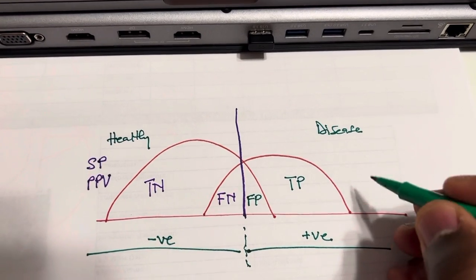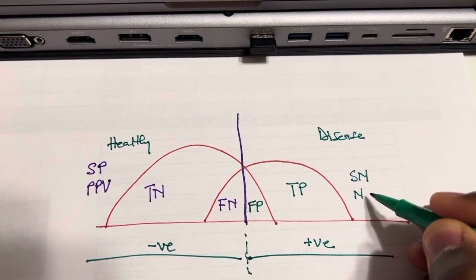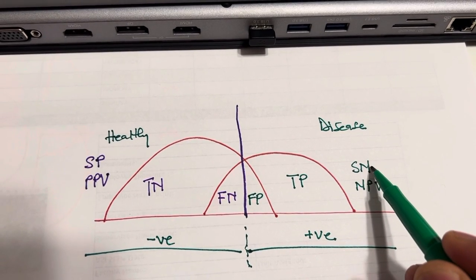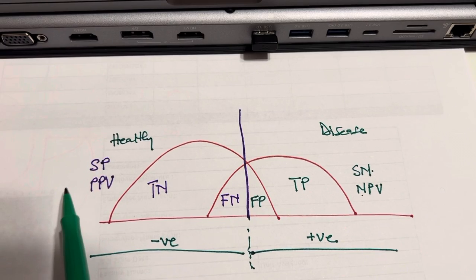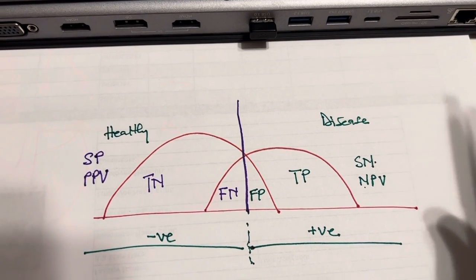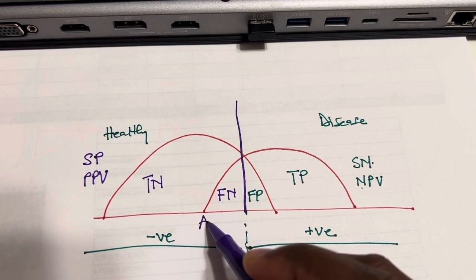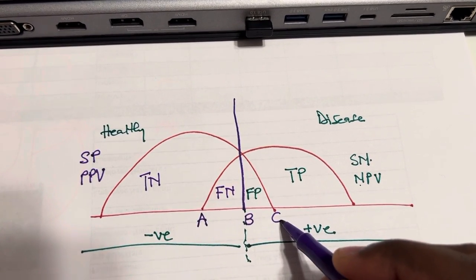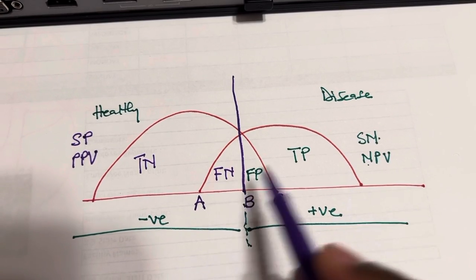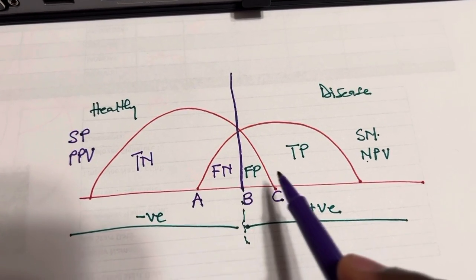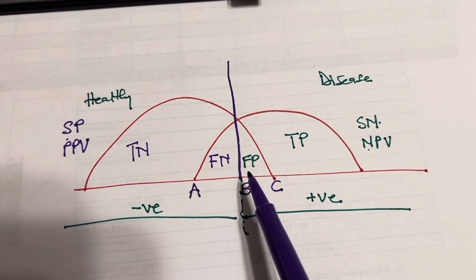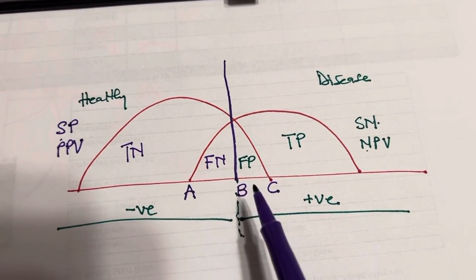Here you put sensitivity and negative predictive value. The mnemonic is: sensitivity ends with N, so negative predictive value follows; specificity ends with P, so positive predictive value goes on that side. Now, they label the cutoffs A, B, and C — where A is the 100% sensitivity cutoff, C is the 100% specificity cutoff, and B is the practical compromise between sensitivity and specificity.